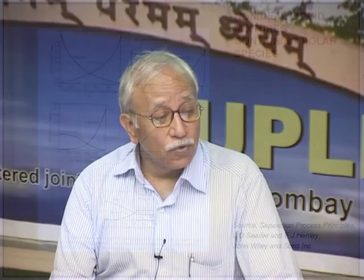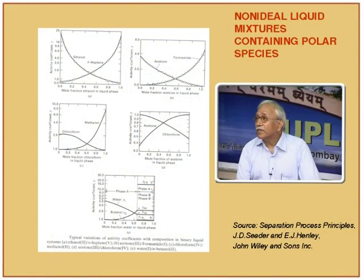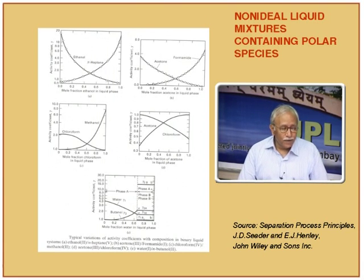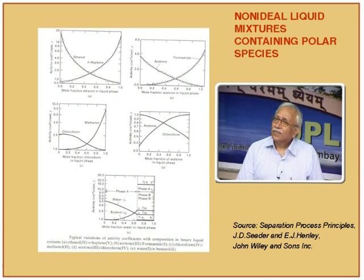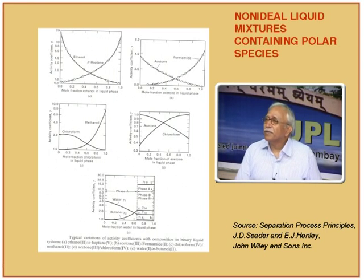For acetone-chloroform, both curves are concave and the gamma values go below 1 — they are showing lesser escape tendency — which is called negative deviation from Raoult's law. And of course, there is the very difficult case where the liquid may split into two distinct liquid phases. Benzene-water is a very good example: small amounts of benzene can stay with water and small amounts of water can stay with benzene, but if large amounts are present, the benzene layer separates from the water layer.